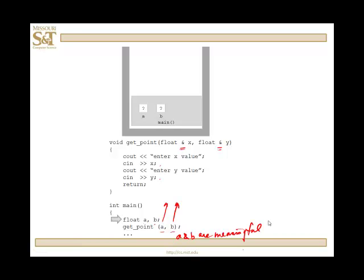When we start the program, main goes onto the stack. a and b, they don't have any meaningful values. I'm going to call the function getPoint, and x and y come into existence. They are aliases for a and b.